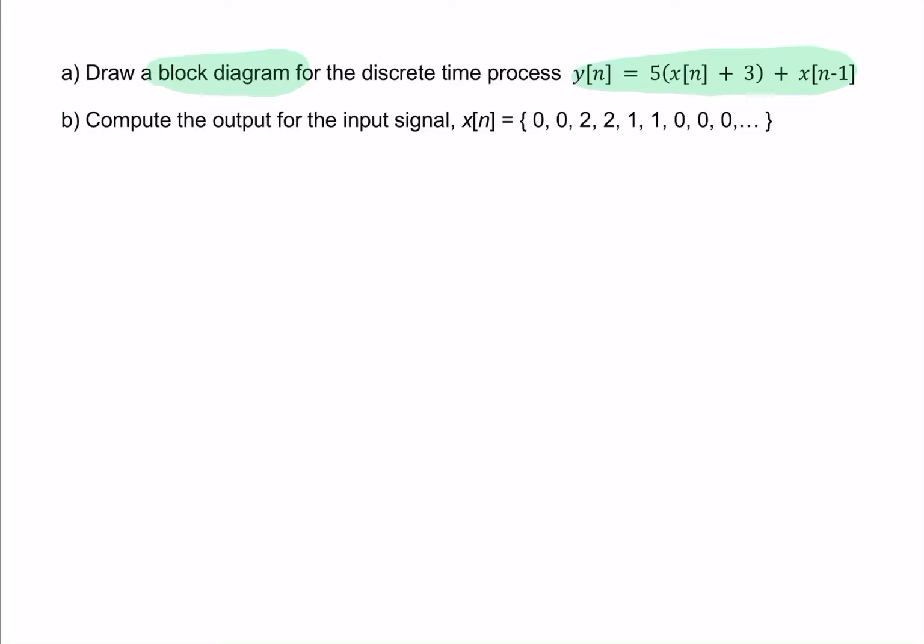We're going to do those operations in that order. So we take x, add 3 to it, so that's my 3, now I have x plus 3. Then I want to multiply it by 5, so I add a multiplication operator there and multiply by 5. So that's this first part done.